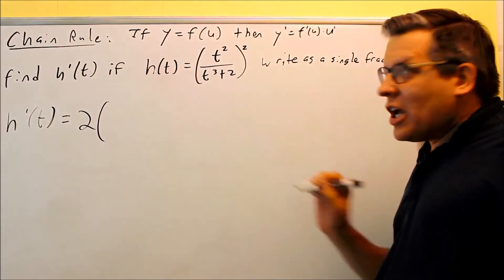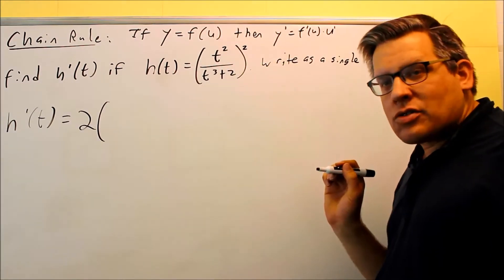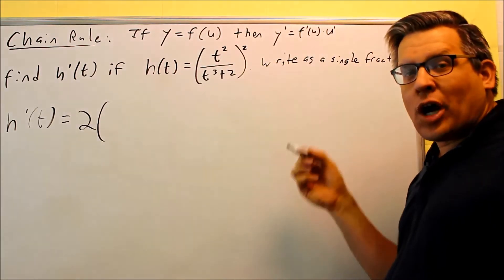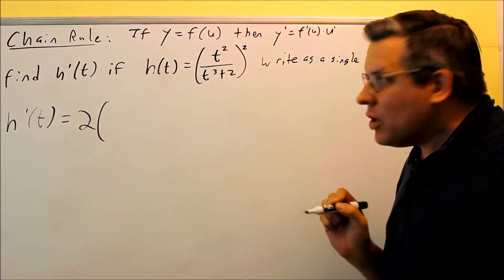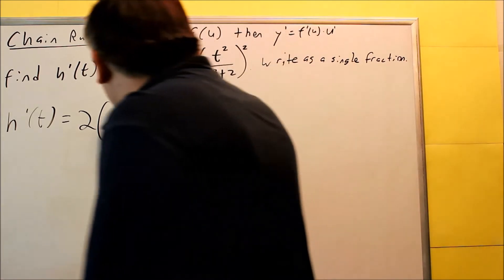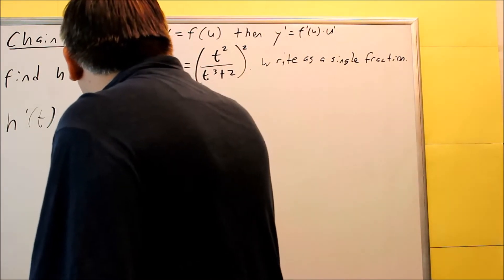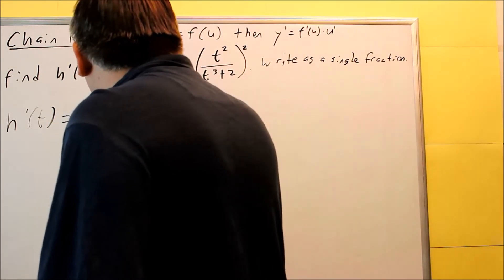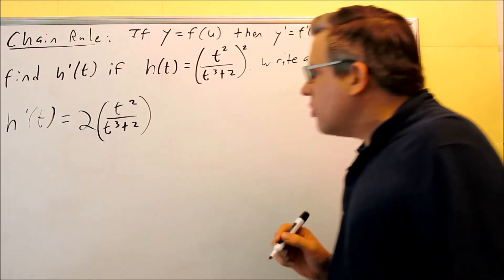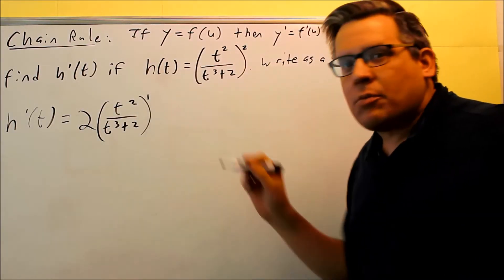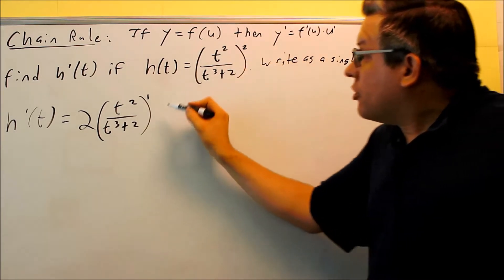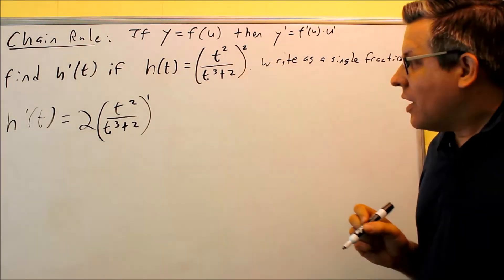Now, when you do that first step, everything in here is going to be exactly the same, because the formula says f prime of u. We're saying that u is all this on the inside, which means that you'll have t squared over t cubed plus 2, that's your u. This will be written to the first power. You don't have to show that, but just showing you that we did apply the power rule there.